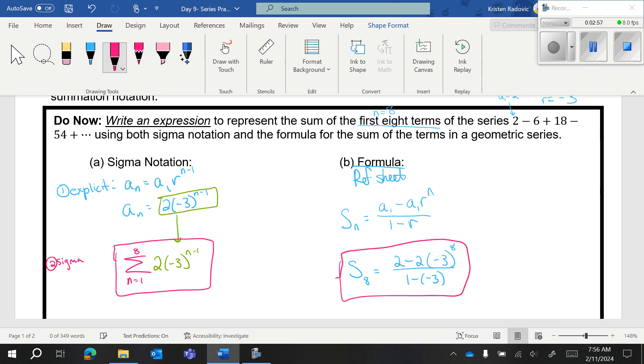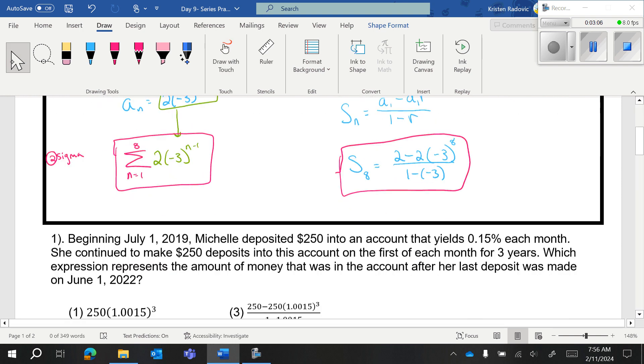This is saying take 2 times negative 3 to the N minus 1, that pattern, and you are going to add all the terms from the first term to the eighth term. And you get the same number if you put both in the calculator. Let's try some region questions.